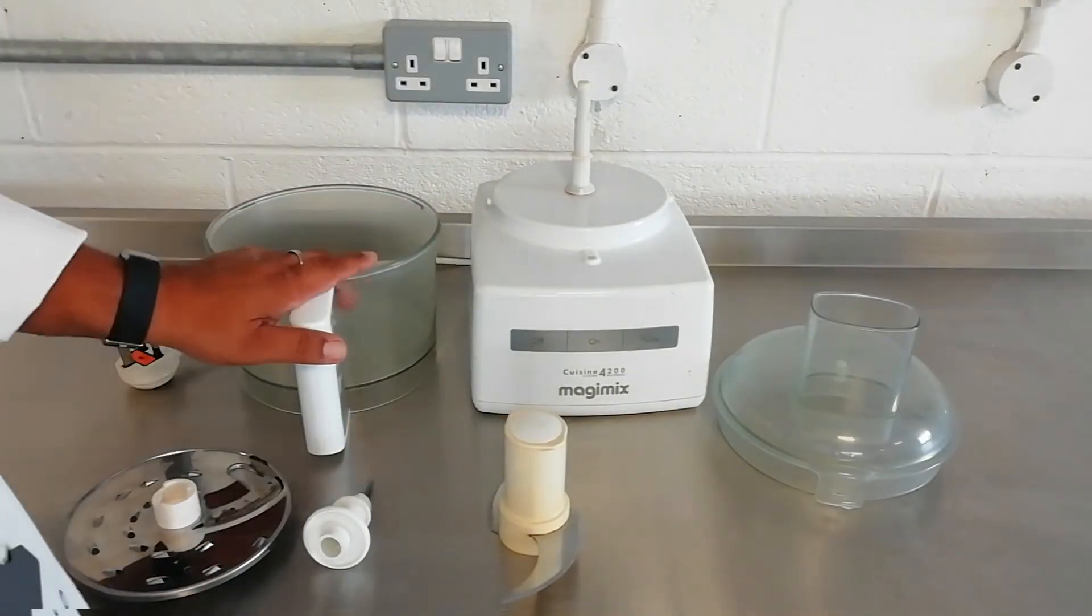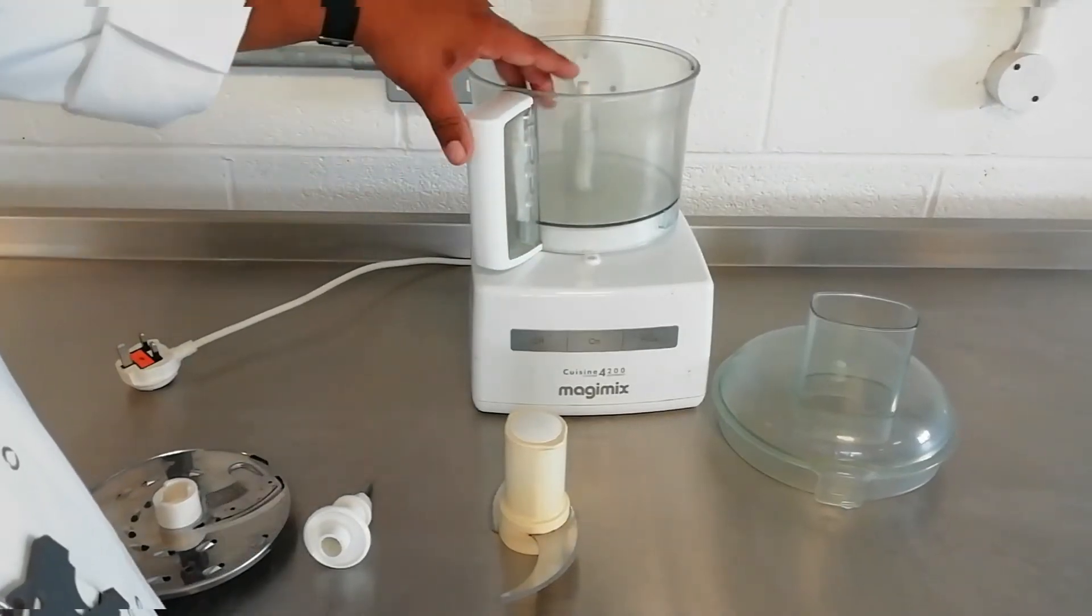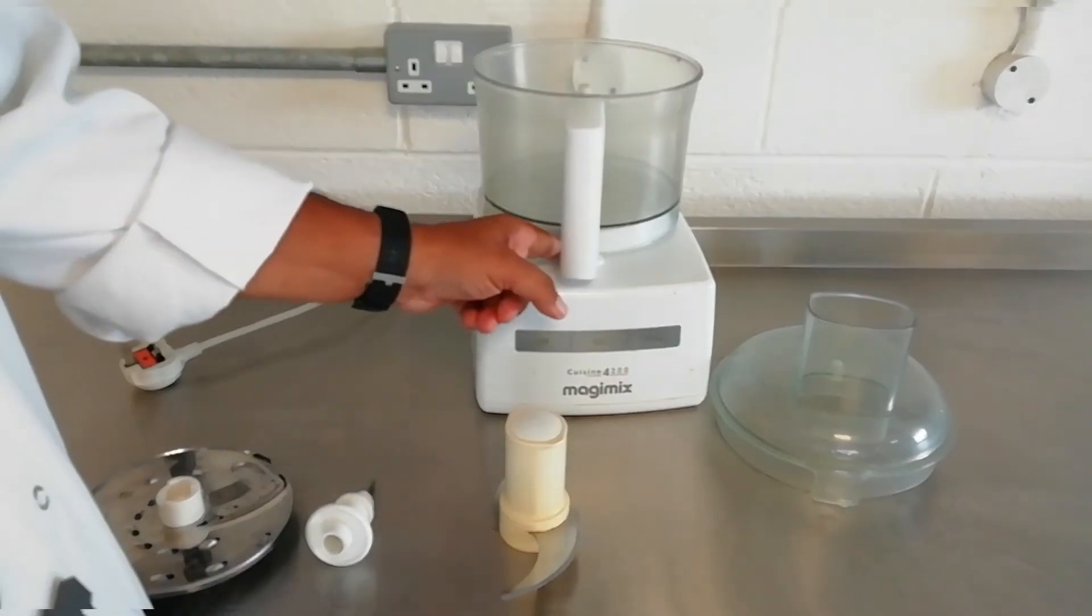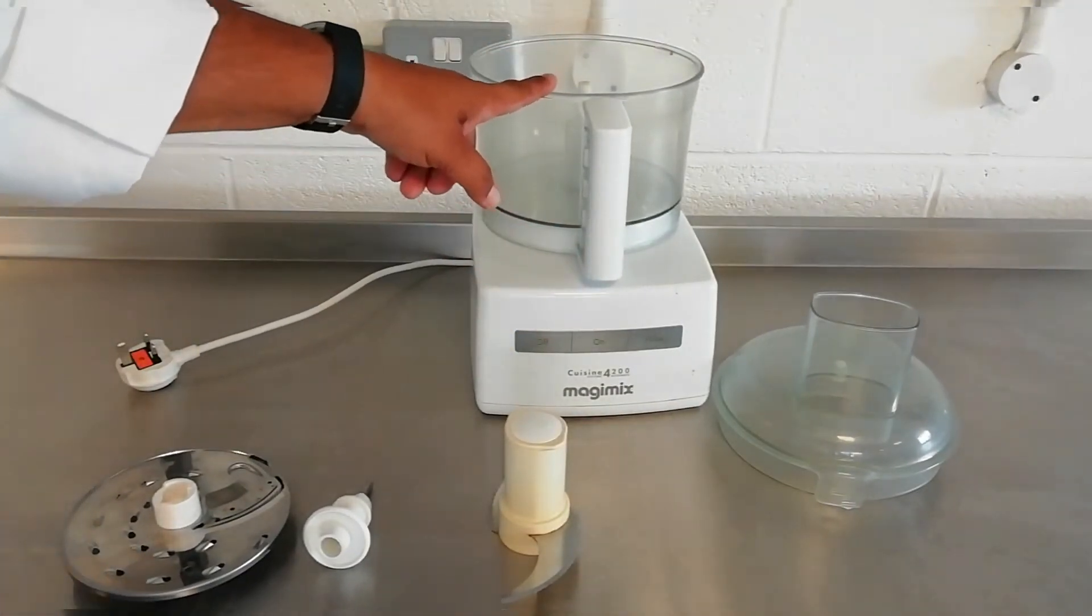So to put these together we first of all put the bowl on and then clip the handle. So you see here there's a button that goes all the way through and that tells the power unit that it can go round.